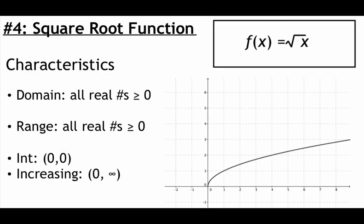Next up is a square root function, f of x equals the square root of x. We need to be a little careful here with the domain — we can't take square roots of negative numbers, so x values are all real numbers greater than or equal to zero. When we plug in those positive numbers we get back positive numbers, so the range is also greater than or equal to zero. We have x and y intercepts at 0, 0, and the graph is increasing on the interval from 0 to infinity.